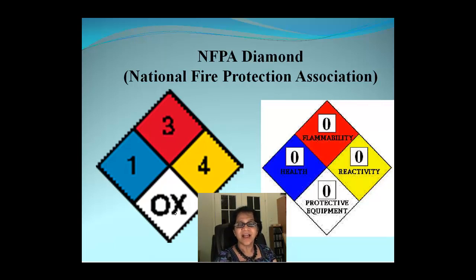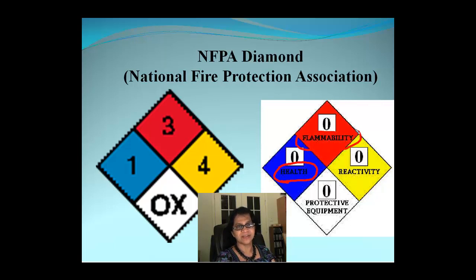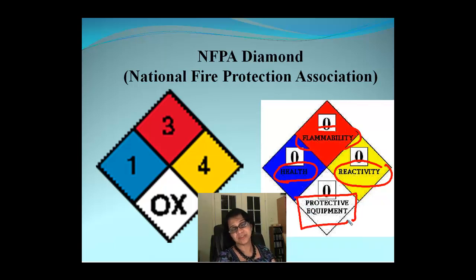You might wonder what the numbers on each square indicate, because those numbers mean something, and each color also represents something. The blue color box corresponds to health, red is for flammability, yellow is reactivity, and white gives you some special features.